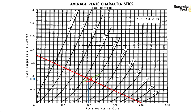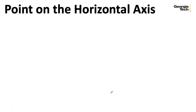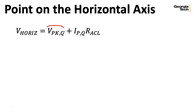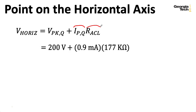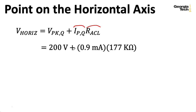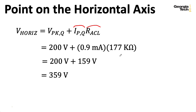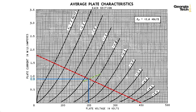Let's start by drawing a point along the horizontal axis. We'll start from the DC operating point, travel 0.9 milliamps downward, and use Ohm's law to see how much voltage that covers using our resistance RACL. Putting those words into math, we plot a point on the horizontal axis by starting at our DC operating point VPKQ and adding the quiescent current times RACL. Plugging in the numbers: we start at 200 volts and add 0.9 milliamps times 177 kilohms, which gives us 200 volts plus 159 volts, giving us a point at 359 volts — I'll use 360 when plotting.